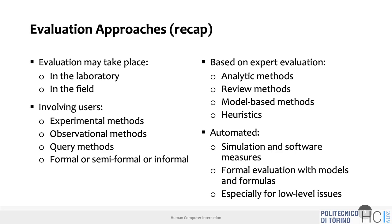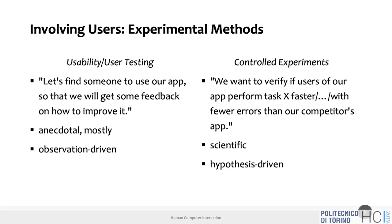Experimental methods are something new that we are going to start today and continue in January. Today we focus on usability testing — more correctly called usability testing — versus controlled experiments or user studies. These are two main families of experimental methods in human-computer interaction. The one we're covering today, and that we'll ask you for milestone number four, is usability testing.